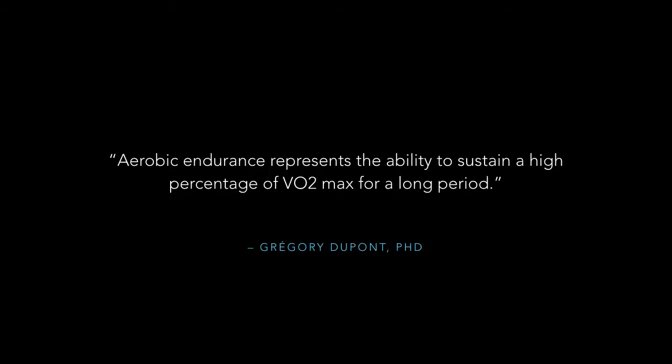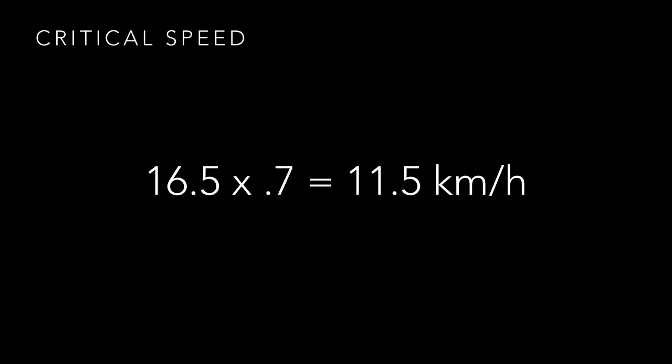This calculated critical speed signifies the pace at which Nathan needs to train to improve his aerobic endurance. Aerobic endurance represents the ability to sustain a high percentage of VO2 max for a long period. The MAS test is also useful for estimating critical speed — critical speed is generally between 70 and 90 percent of MAS. In a training program aiming to improve VO2 max, the intensity should be higher than that speed. Nathan's MAS was 16.5, so using 70 percent gives an estimated critical speed of about 11.5 kilometers per hour, which was within range of his calculated critical speed of 11.